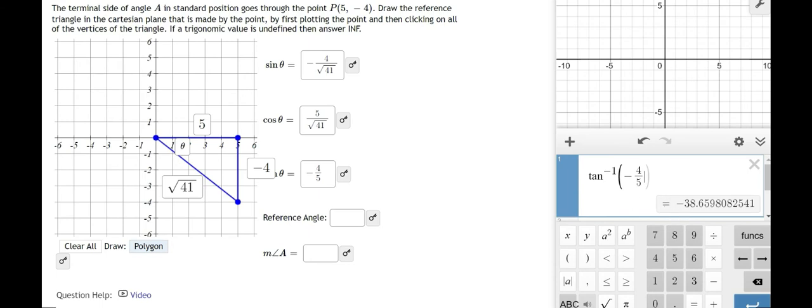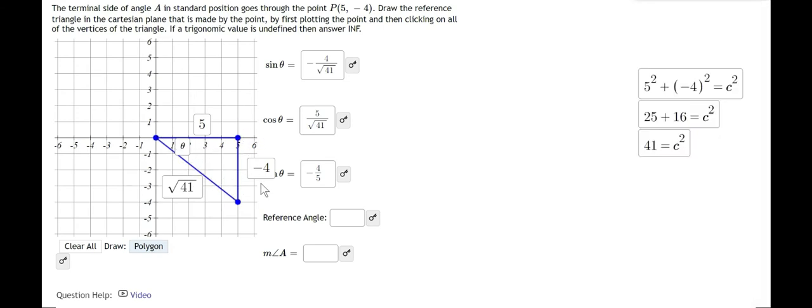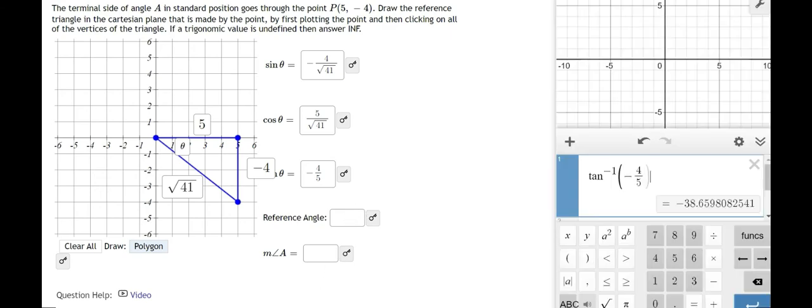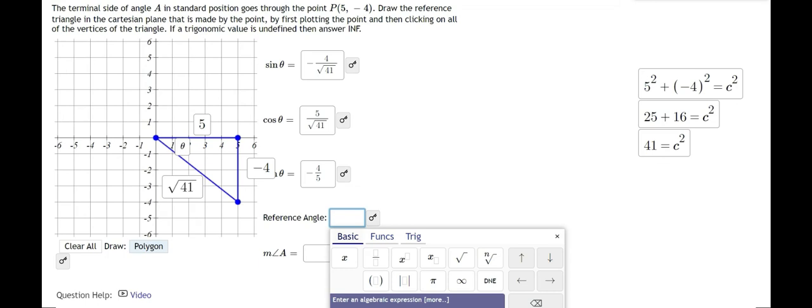And this value here says negative 38.66. So this is negative because we're in the fourth quadrant, but we're referencing a reference angle. Reference angles are never going to be negative. They're always going to be positive because we're talking about the distance that this hypotenuse is from the x-axis. What would that degree be? So that is going to be 38.66. So here for our reference angle, we're going to say 38.66.